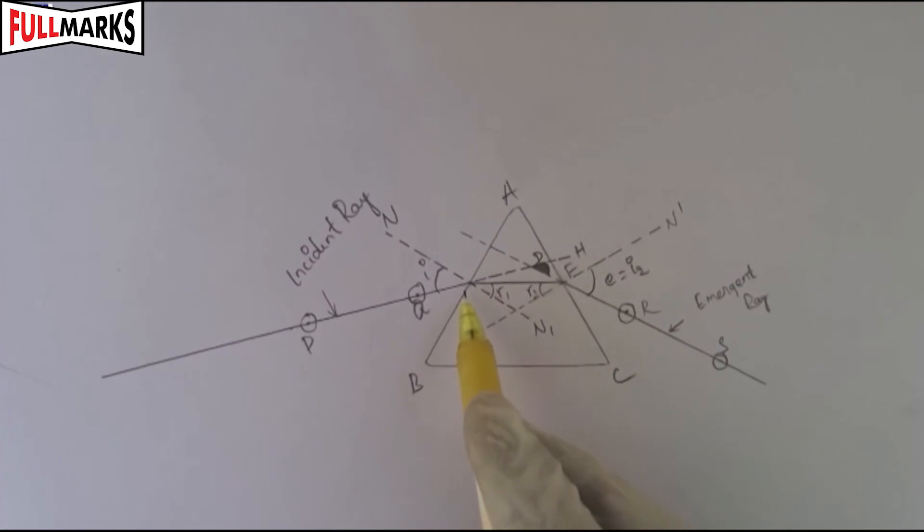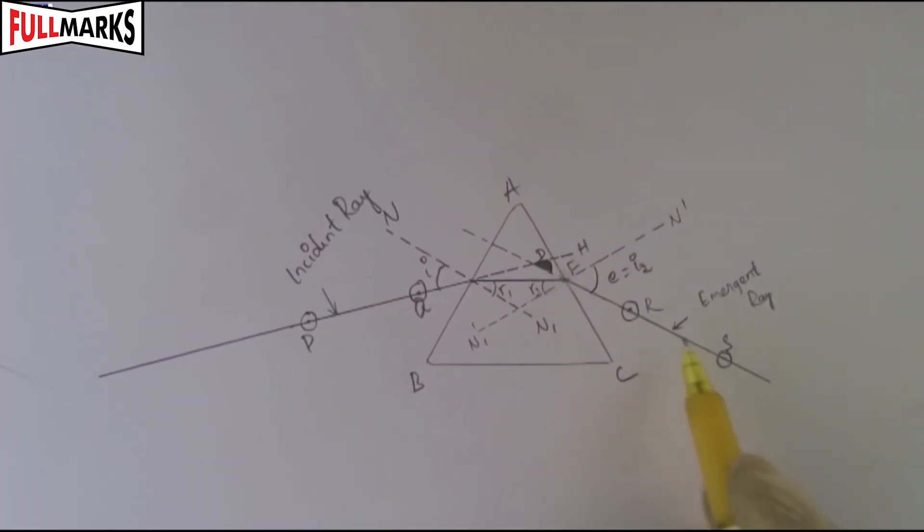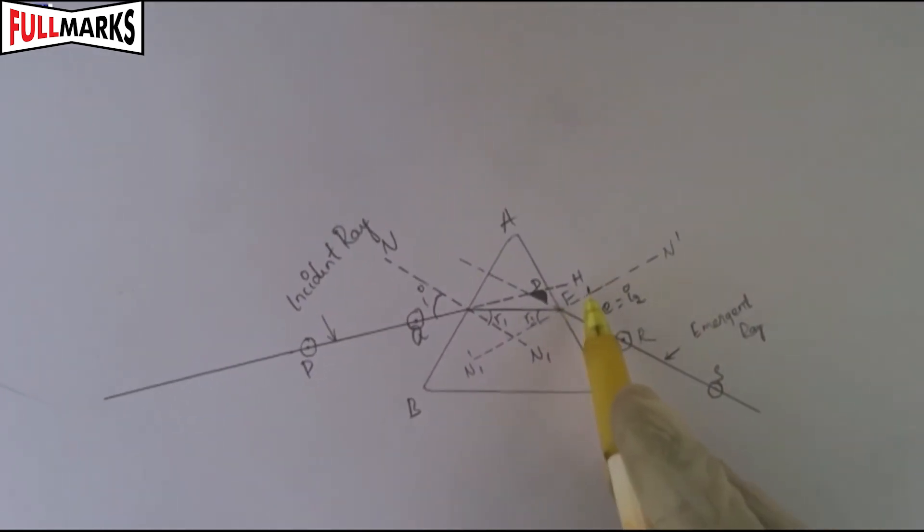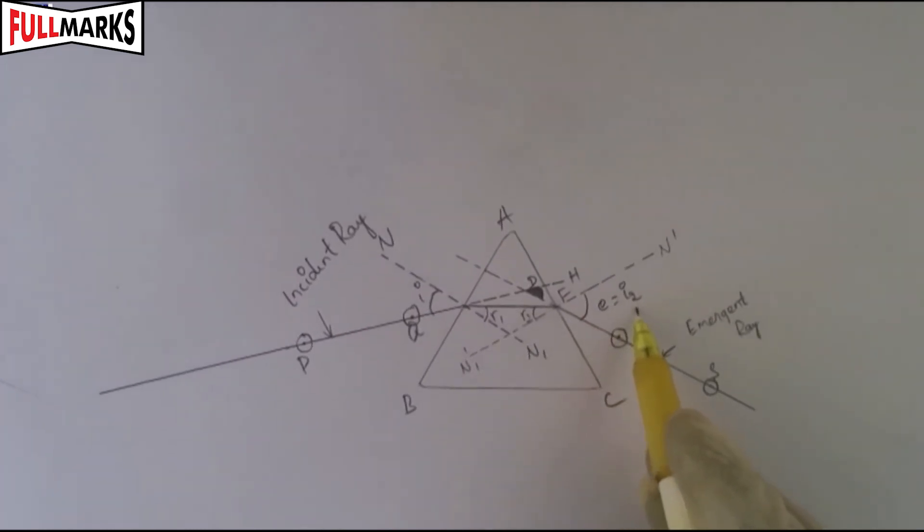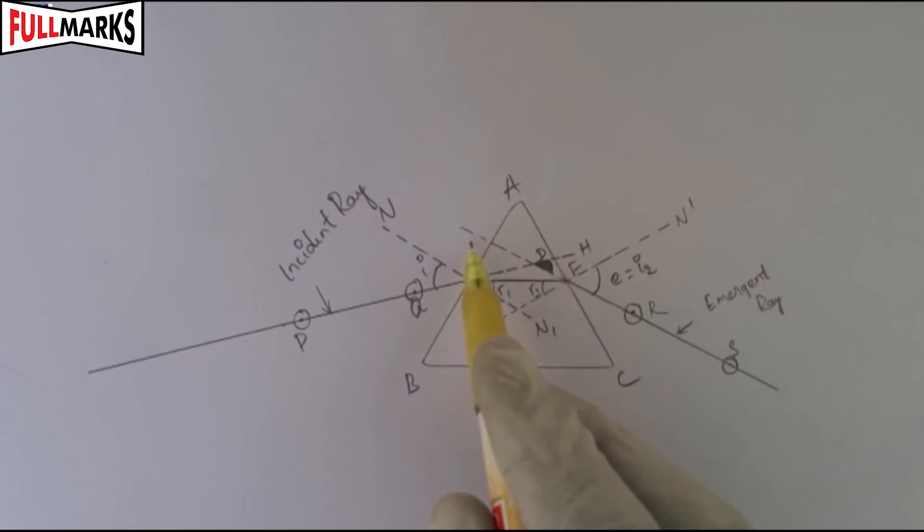Mark the angle of incidence I, angle of refraction R, and the angle of emergence E as shown in the figure. Repeat the experiment for more angles of incidence, preferably between 45 degrees and 75 degrees.